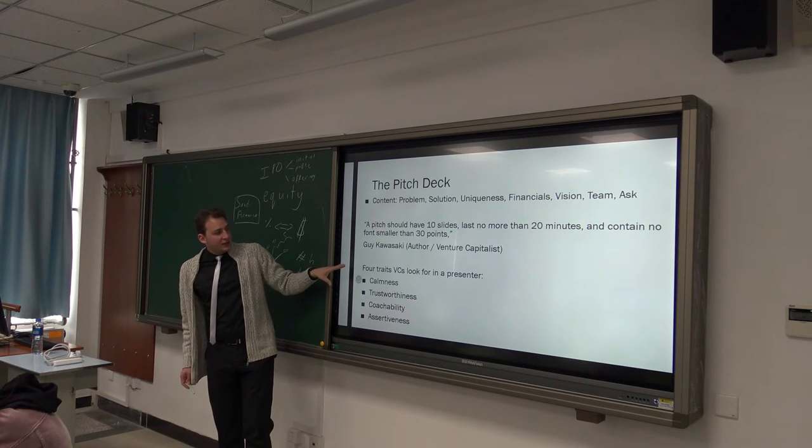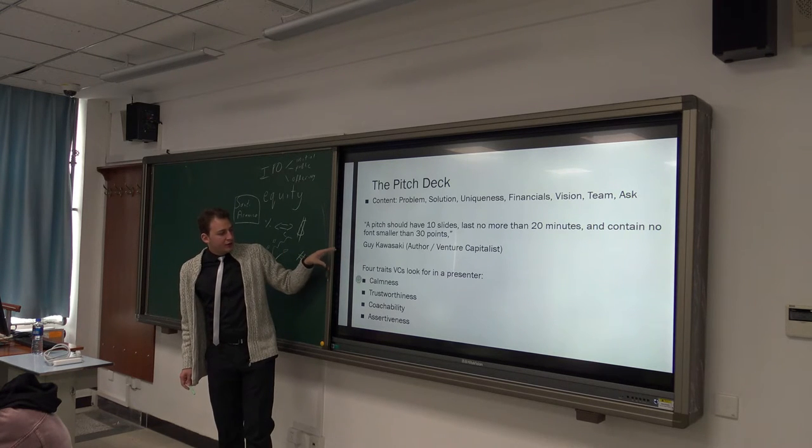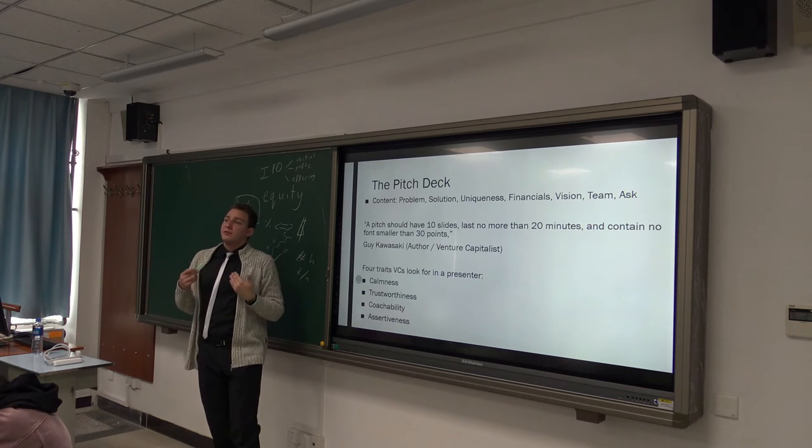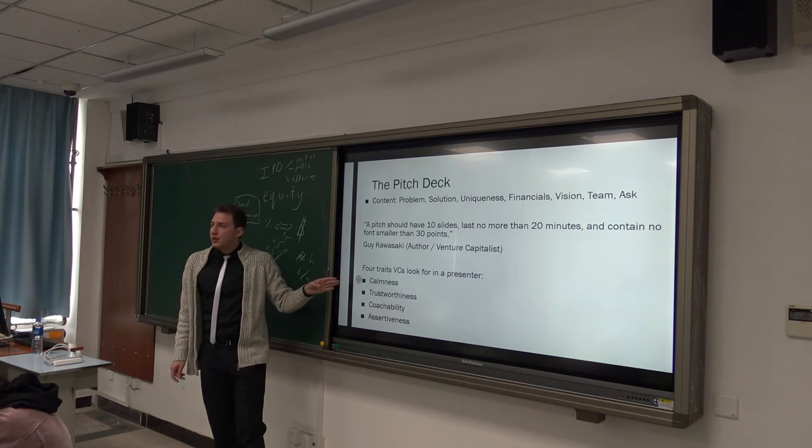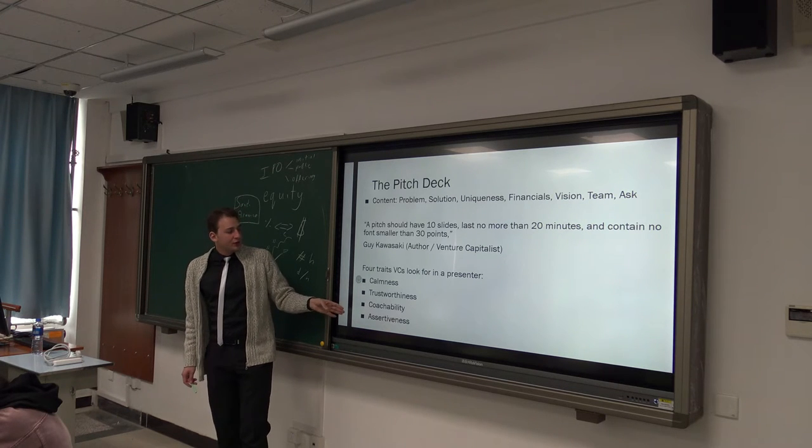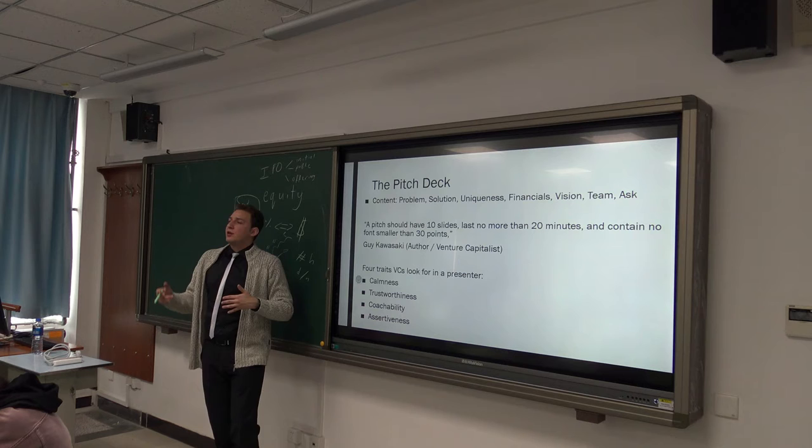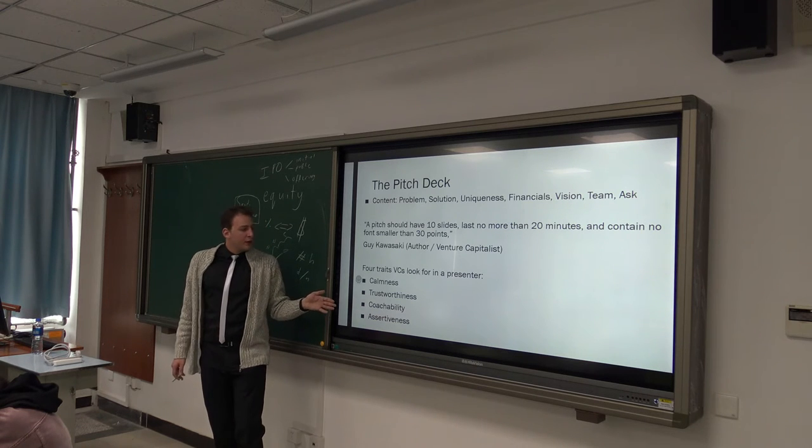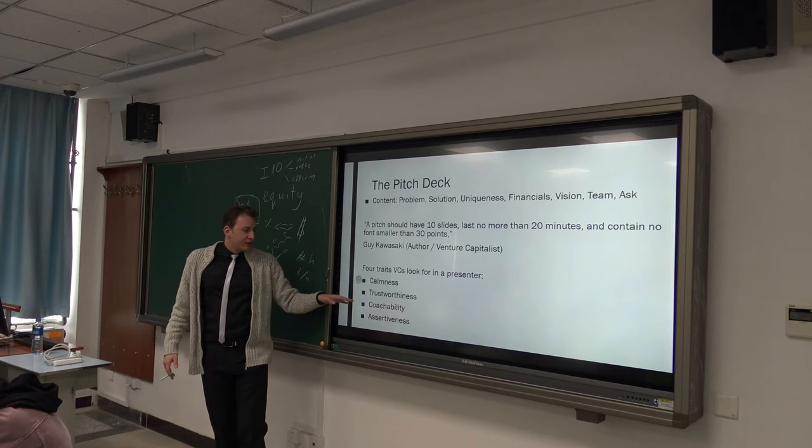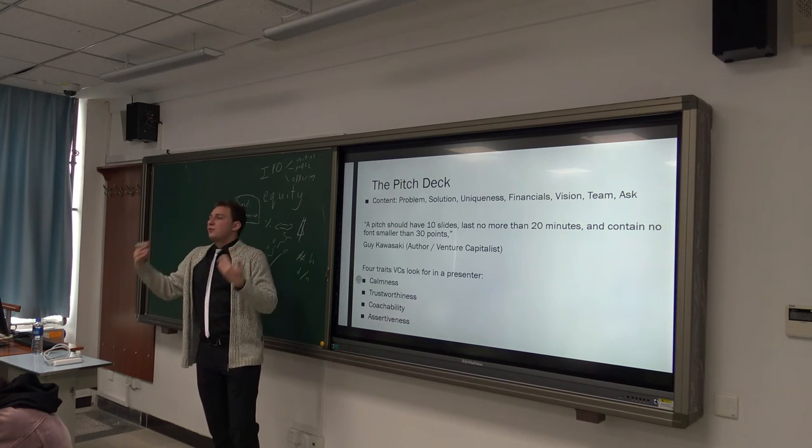When you're presenting to venture capitalists, there are certain traits that tend to be viewed upon favorably. Calmness is one of them, trustworthiness, coachability, and assertiveness. There is a little bit of a contradiction here. For instance, if you look at it on the surface, how is somebody coachable but assertive at the same time?